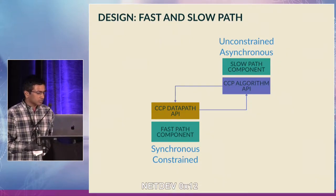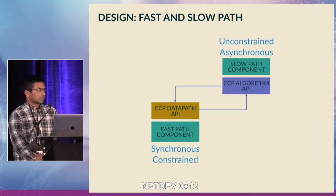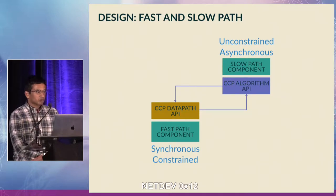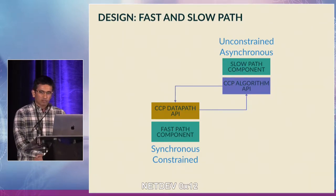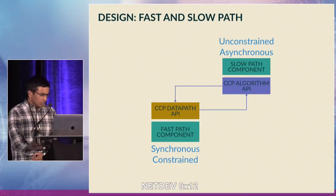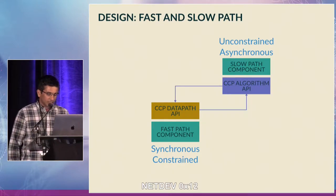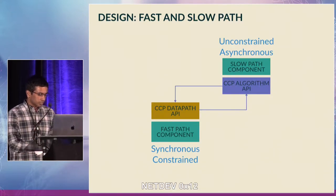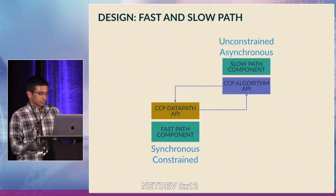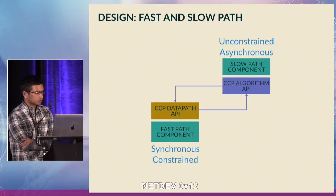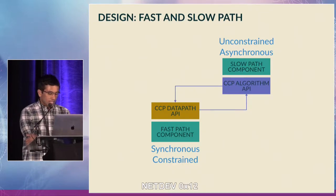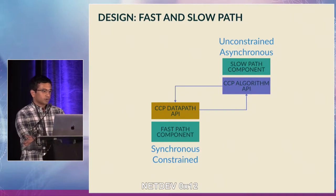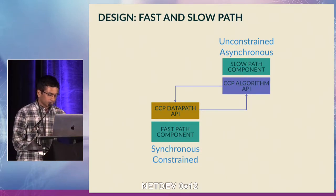For the rest of this talk, I'll discuss CCP's congestion control API. We need to support asynchronous operation without compromising algorithm correctness or performance. Because each packet contains valuable information, we gather measurements per packet, but make most congestion control decisions asynchronously. So we split algorithm implementations into two components: a slow-path component that has access to user space libraries and runs asynchronously, and a datapath or fast-path component that has a constrained API but operates synchronously upon every feedback received.